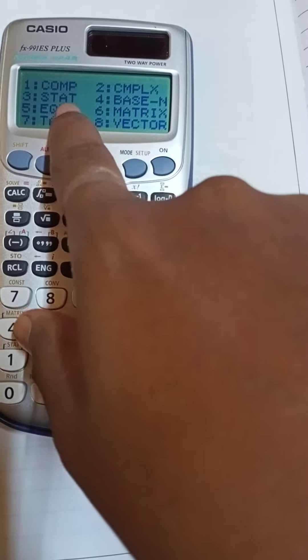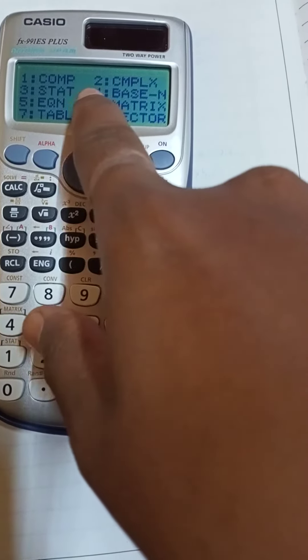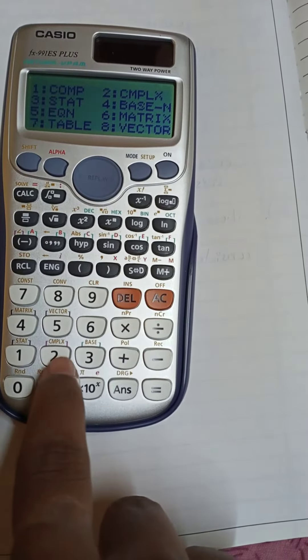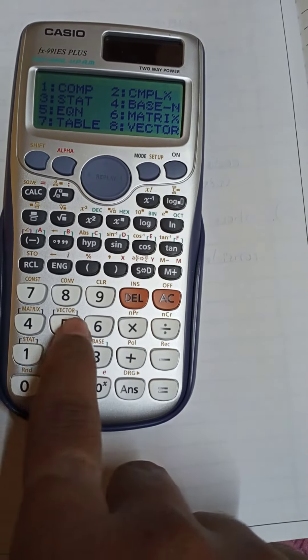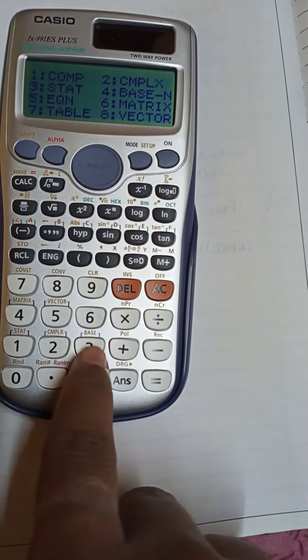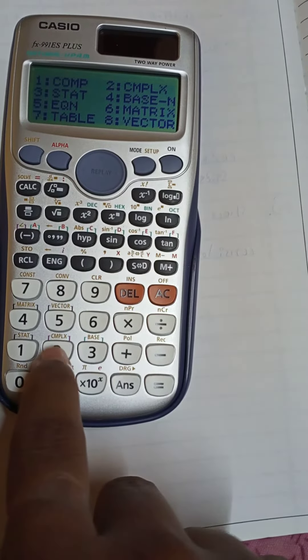You guys can see it shows complex, comp, stats, base, matrix and all. Here is written matrix, vector, stat, complex, base and all. You need to click on 2 for complex, just click on 2.